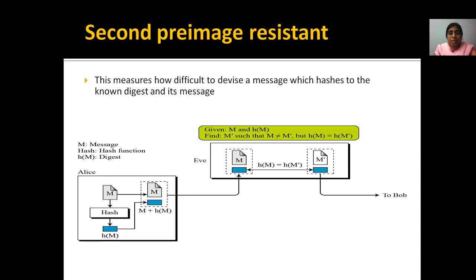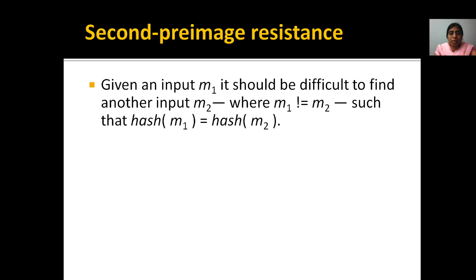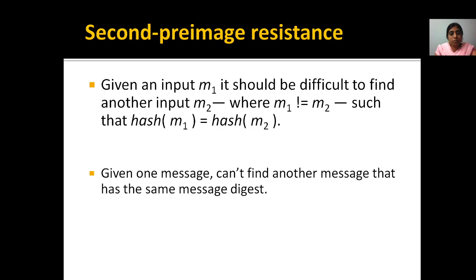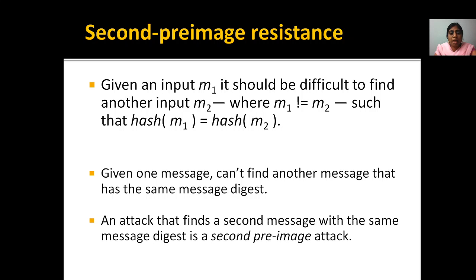This is nothing but pre-image resistance, which can resist the attack described previously using second pre-image resistance. Given an input M1, it should be difficult to find M2, where M1 and M2 are not the same, such that hash(M1) equals hash(M2). Given one message, you cannot find another message that has the same message digest. An attack that finds a second message with the same message digest is called a second pre-image attack.